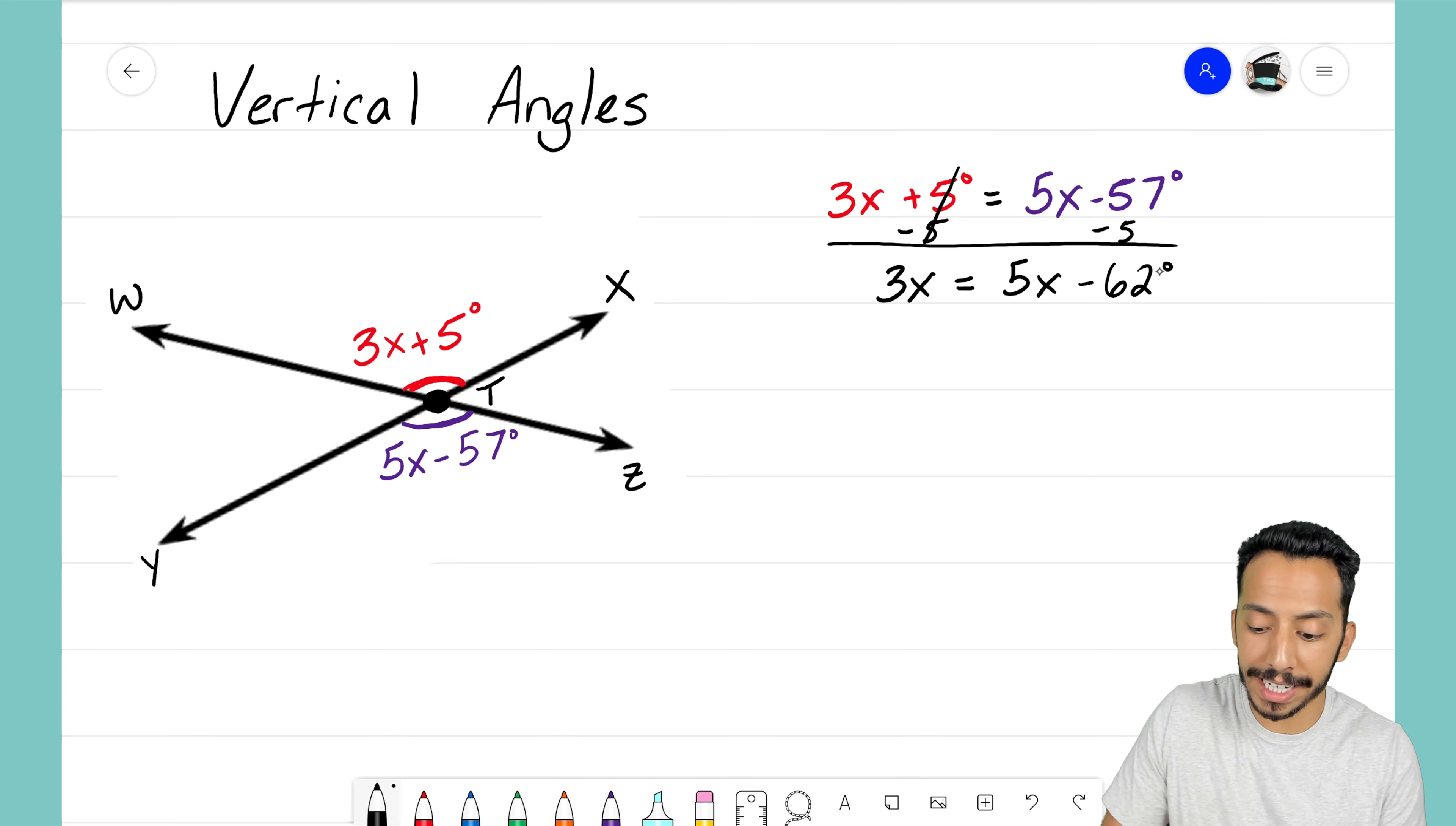Now I want to move my variable over to the left side, so to move that over I just need to subtract 5x on both sides. By doing so, the 5x on the right hand side zero out, they're gone. So 3x take away 5x, that's going to leave me with negative 2x.